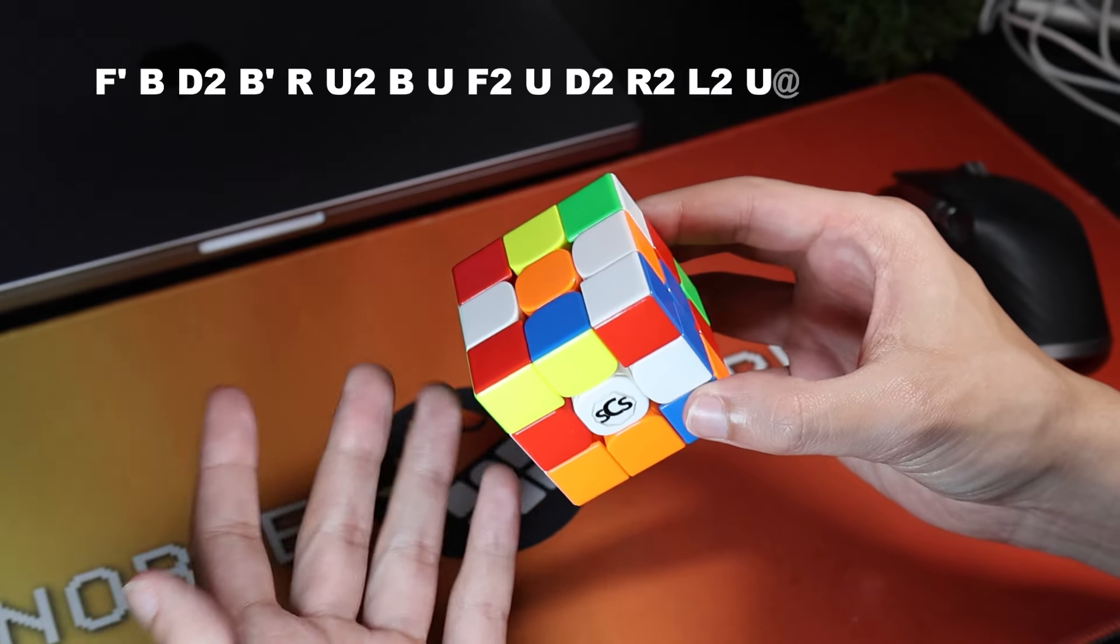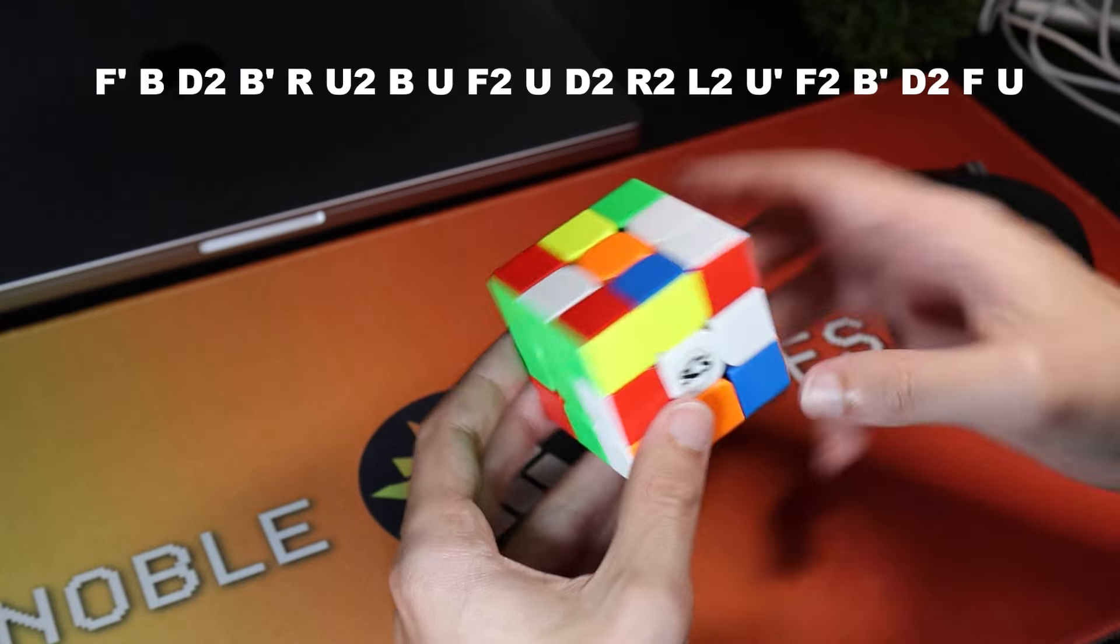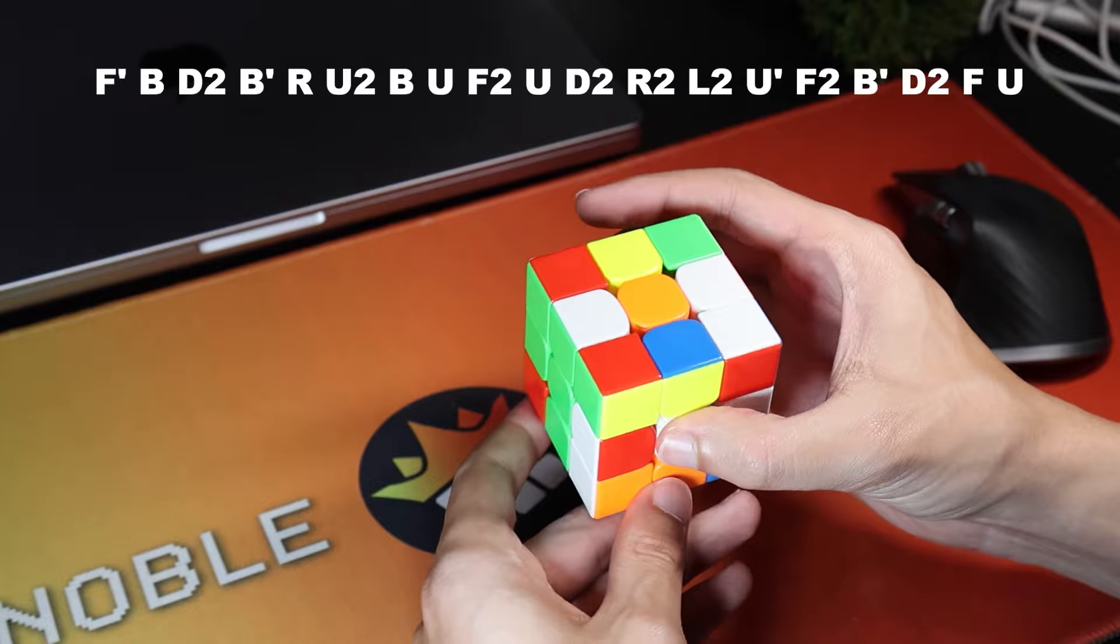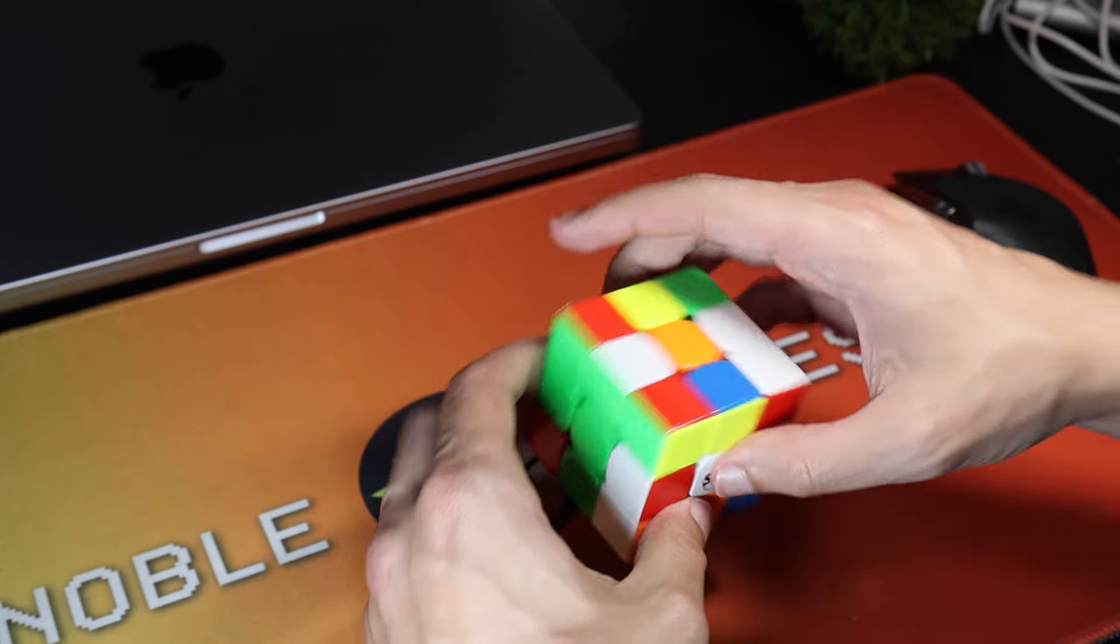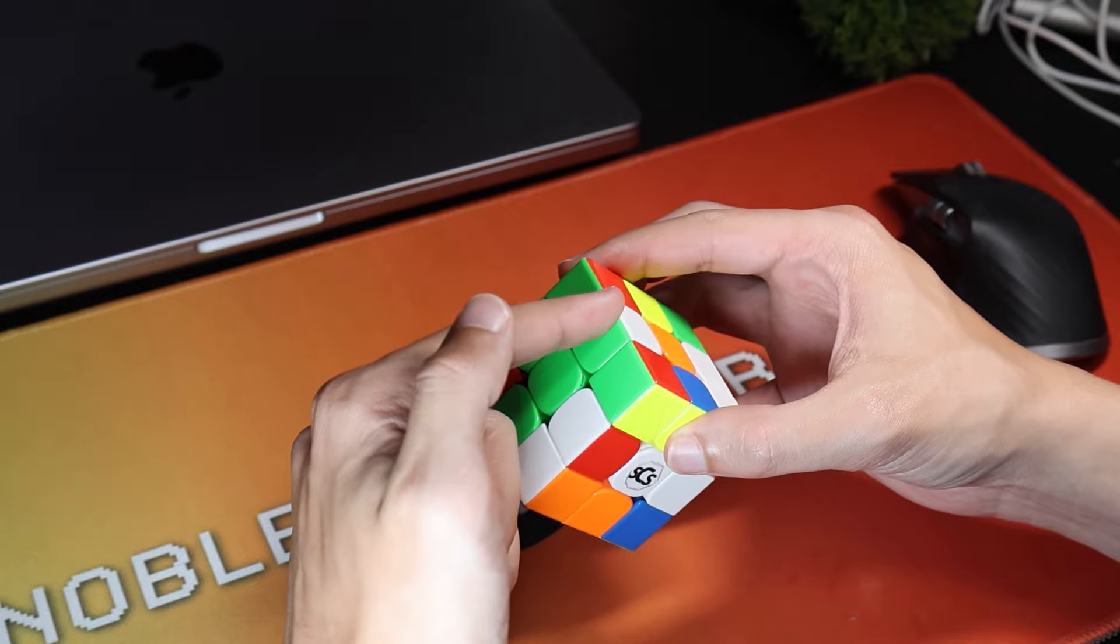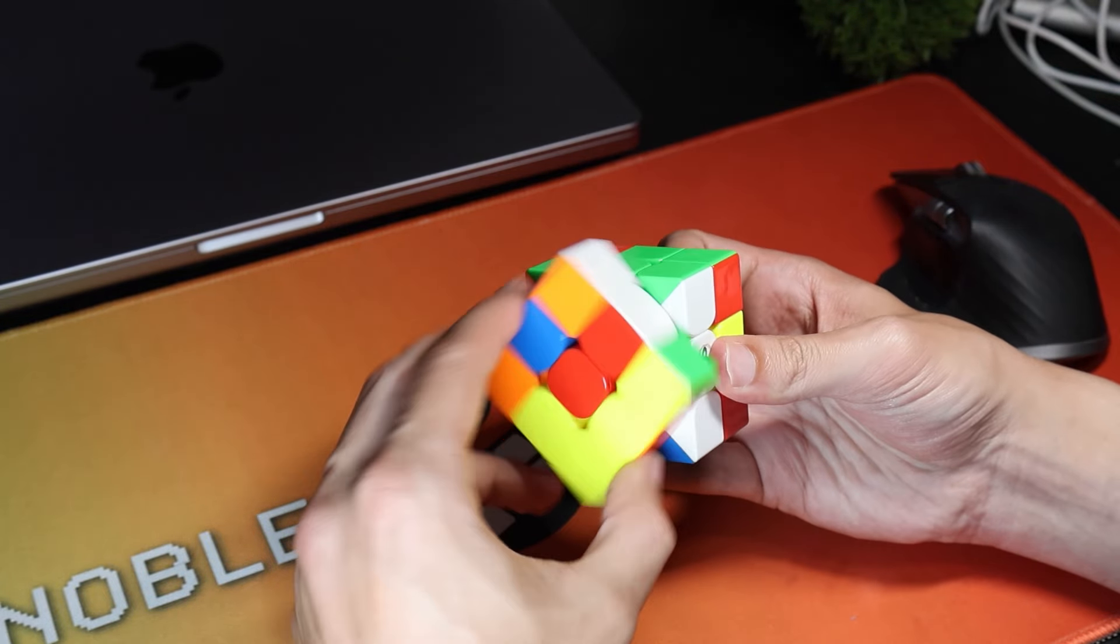So as you can see on white, it's already a pretty good scramble. We've got the white cross piece here. We've got this green and this red, it could just go in in two moves. And then we've got orange here. So what I actually did to start with, I held green on front and inserted the green edge and the red edge first, just like this.